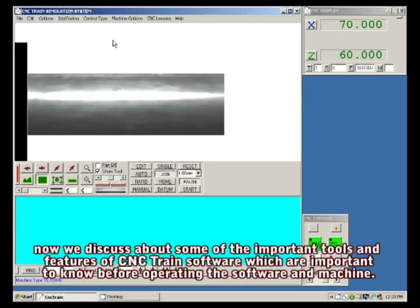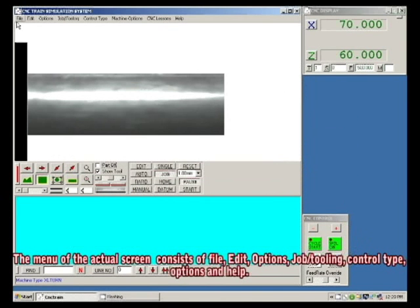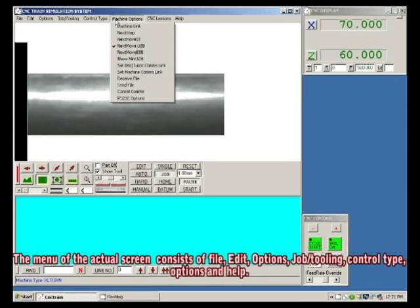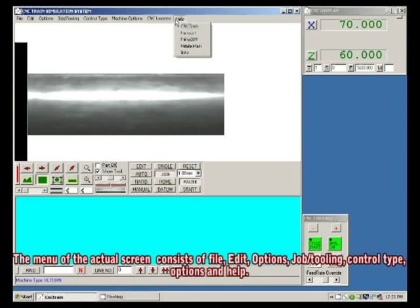This shows the actual screen of a CNC train simulation software. Now we will discuss some important tools and features of CNC train software. The menu of the actual screen consists of file, edit, options, jobber tooling, control type, machine options, CNC lessons, and help.